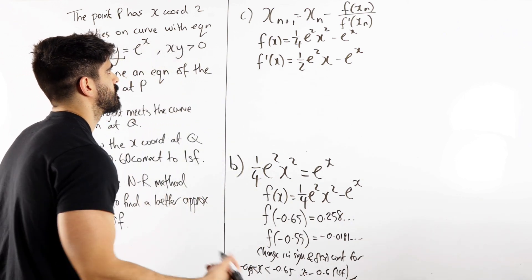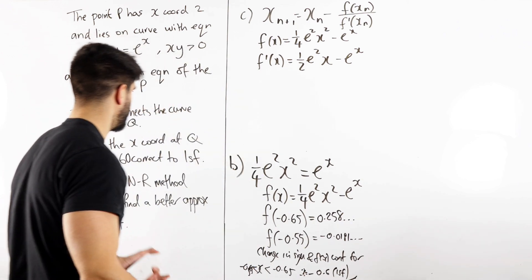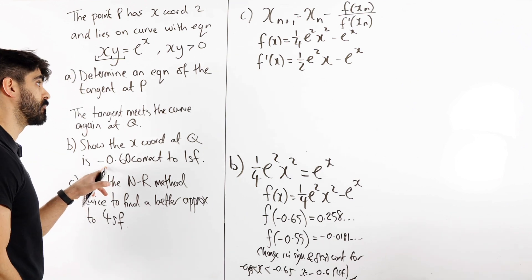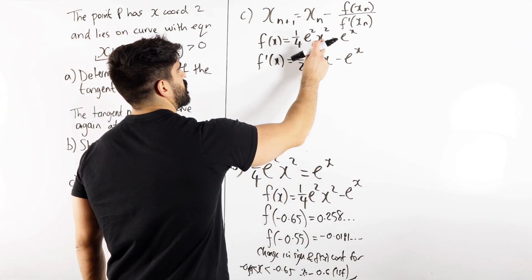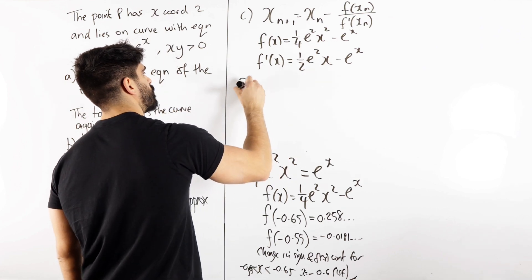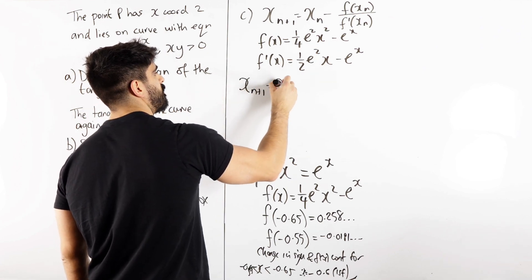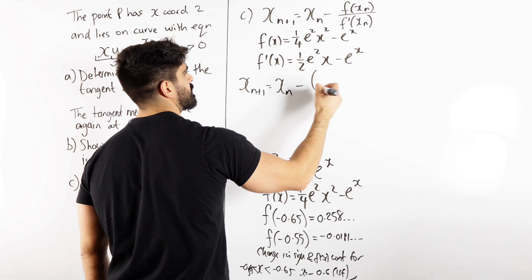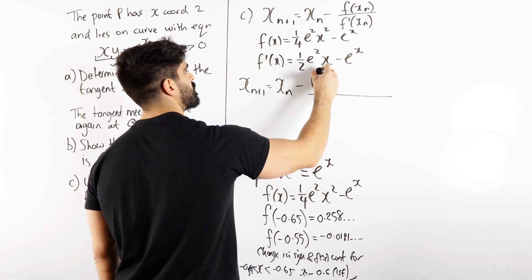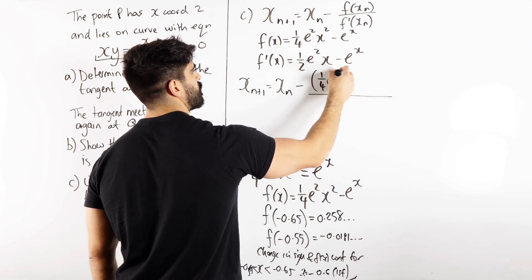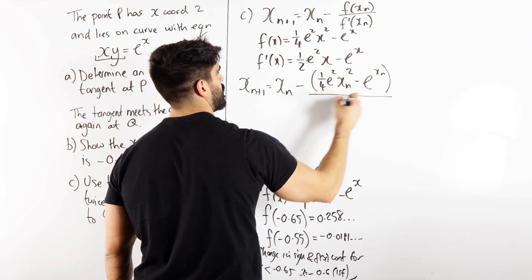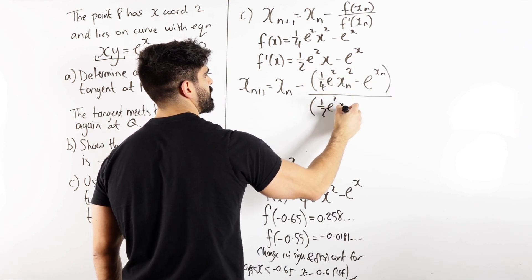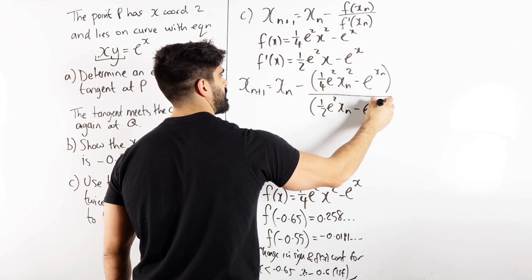Okay, so just to show you guys what one of the iterations would be. So we're going to start off with 0.6. Okay, so you're going to sub in 0.6 into this. So this is what we're going to type in the calculator. So wherever I write xn, we're going to be substituting in 0.6. So we get a quarter e squared xn squared minus e to the xn, all over a half e squared xn minus e to the xn.